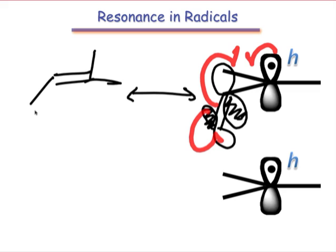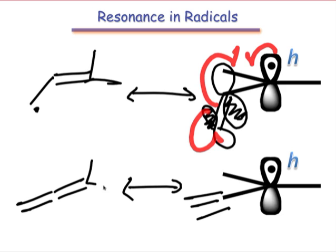Similar resonance structures are possible for the propargillic radical, which is adjacent to a triple bond. Again, in this case, the important resonance interaction is a pi-type interaction between a half-filled h orbital and an empty pi star.